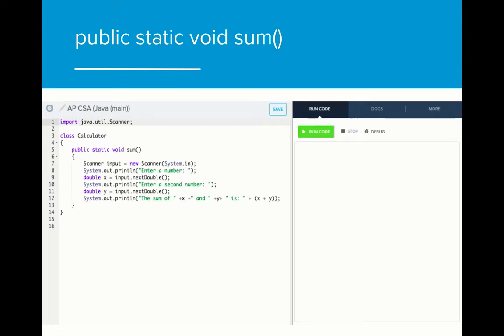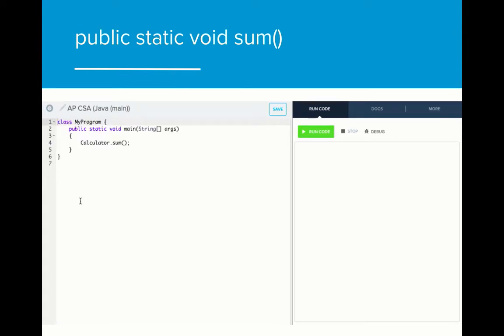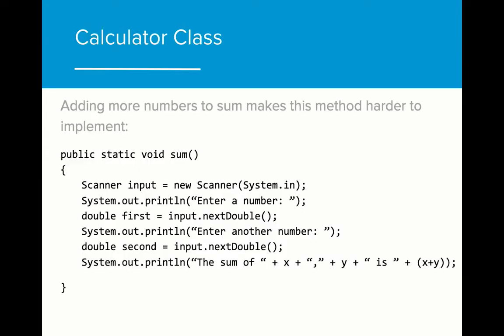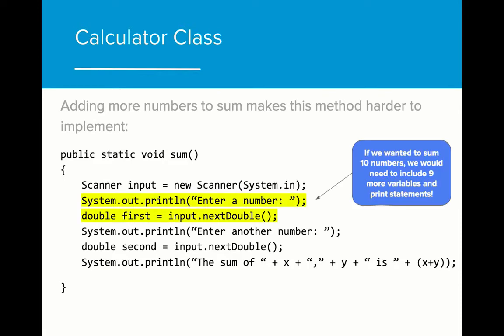Here's a working example of the static method sum we just created. Our method is great for adding two numbers, but often we want to add more than two values together. With our current method, that proves to be pretty difficult. If we wanted to add more values to the total sum, we would have to add a new print statement and a new call to scanner every single time we wanted to add a value. That would be a very tedious process.